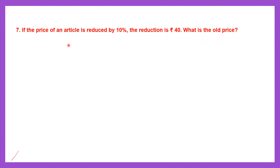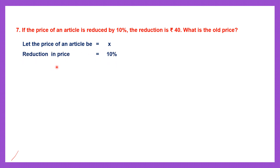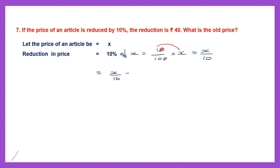Question 7. If the price of an article is reduced by 10%, the reduction is 40 rupees. What is the old price? We don't know the old price, so let's consider it to be x. Reduction in price is 10% of x, which means 10 by 100 into x. Let's cancel the zeros — we have 1 into x in the numerator and 10 in the denominator. So x by 10 is the reduction in price, and the reduction is given as 40 rupees. That means x by 10 equals 40.